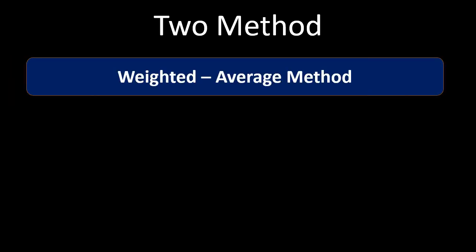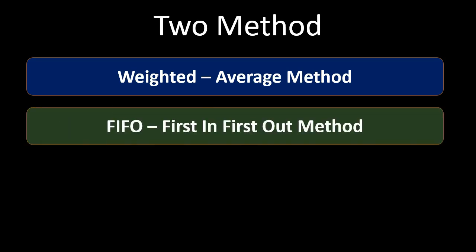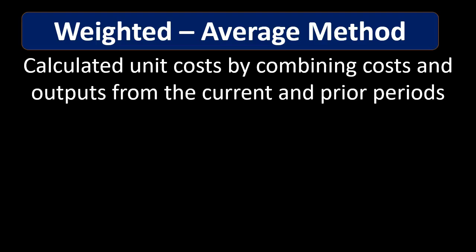There are a couple of methods we can use to do that. One is the weighted average method and the other is the first in first out method. You might recognize these as the flow of inventory assumptions we would make for a merchandising company, but the application will look a little different within the manufacturing process.